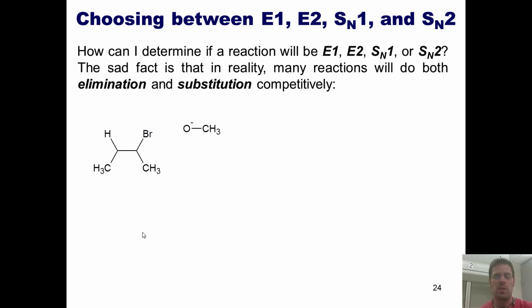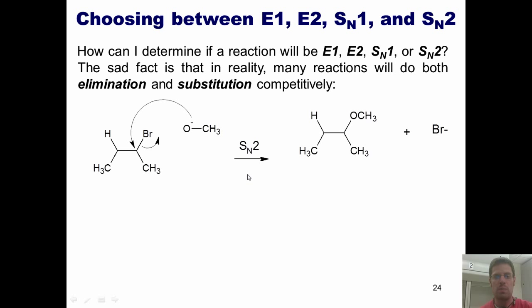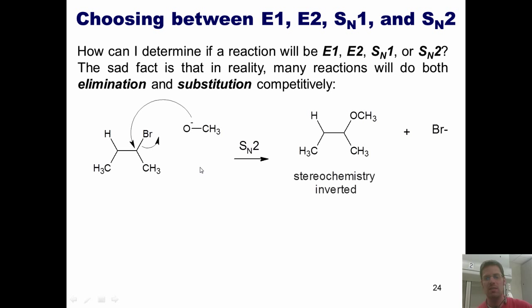If I react it with a very strong base like methoxide, which has a localized negative charge on the oxygen, that methoxide might come in, form a bond with this carbon, and kick off the bromide — giving me a substitution product. This would be an SN2 reaction. As we discussed, because methoxide has to come in from the back side of the bromine, you get inverted stereochemistry. So if the carbon-bromine bond were wedged in the starting material, the carbon-oxygen bond would be dashed in the product.